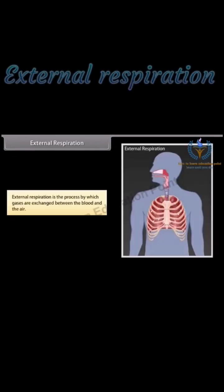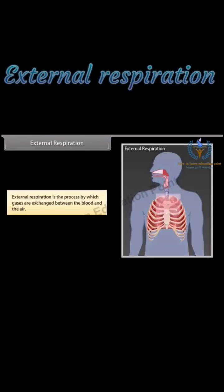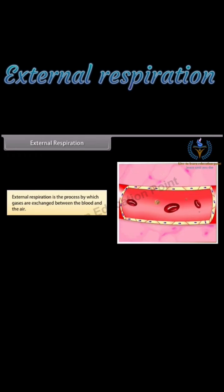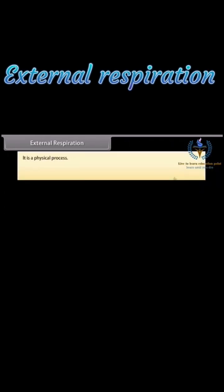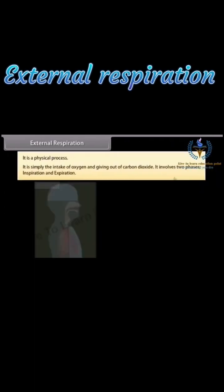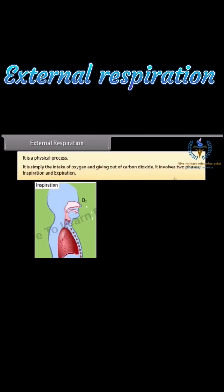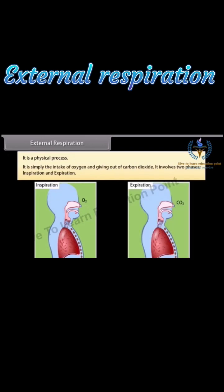External respiration is the process by which gases are exchanged between the blood and the air. It is a physical process — simply the intake of oxygen and giving out of carbon dioxide. It involves two phases: inspiration and expiration.